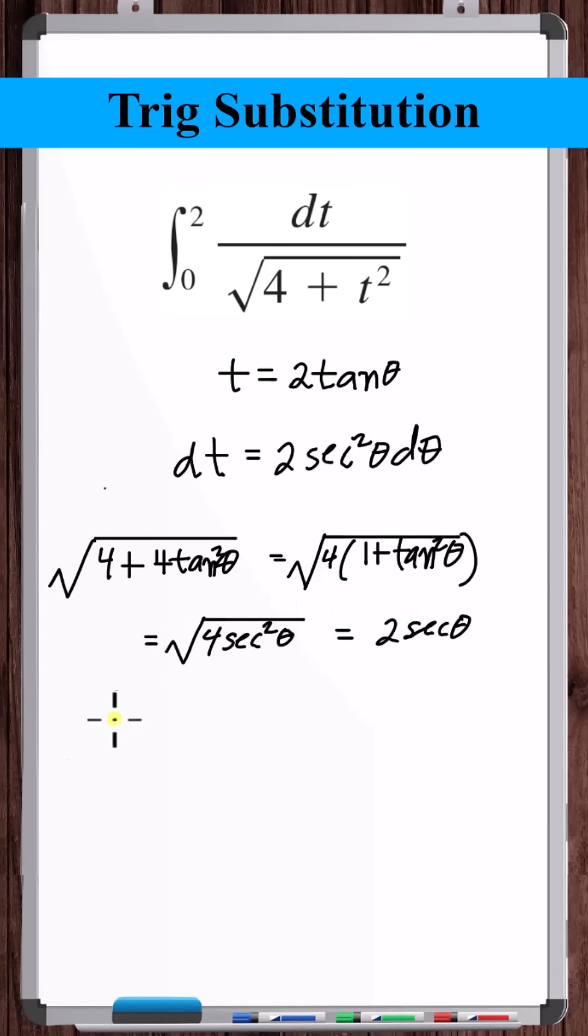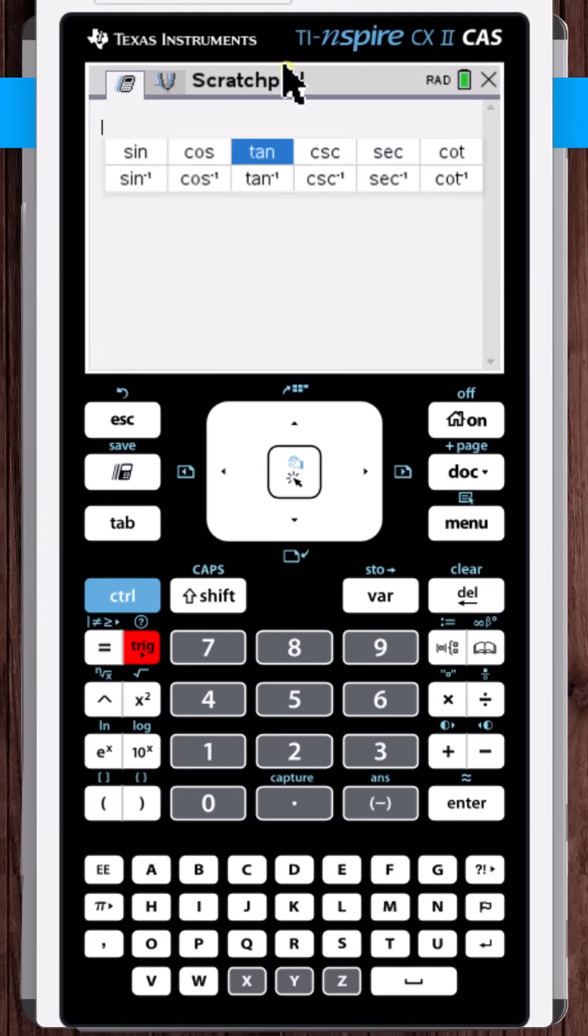Applying the substitution to the integral, when t is equal to 0, theta is equal to arc tangent 0, which is 0. When t is equal to 2, we've got 2 is equal to 2 tangent theta, so tangent theta is equal to 1. Theta is equal to arc tangent of 1, pi over 4.